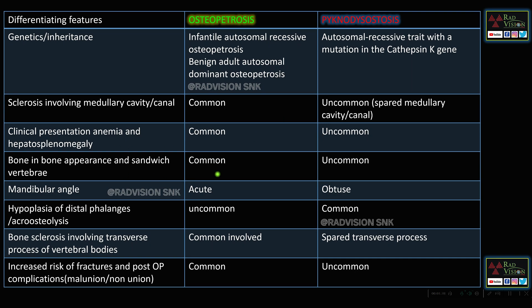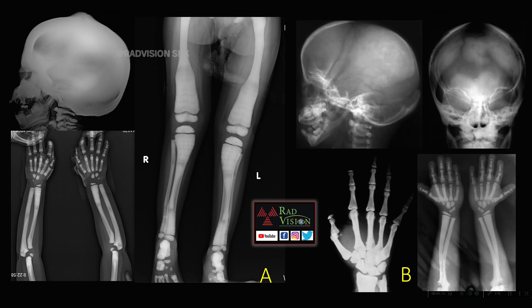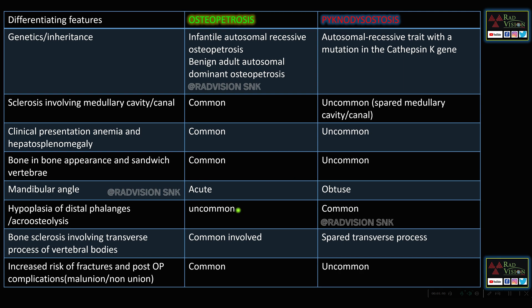Coming to the differentials between osteopetrosis and pyknodysostosis: bone-in-bone appearance or sandwich vertebra are commonly seen in osteopetrosis but not in pyknodysostosis. The mandibular angle will be acute in osteopetrosis whereas obtuse in pyknodysostosis. Acro-osteolysis is commonly seen in pyknodysostosis, not in osteopetrosis. Multiple fractures and complications are common in osteopetrosis but not in pyknodysostosis.